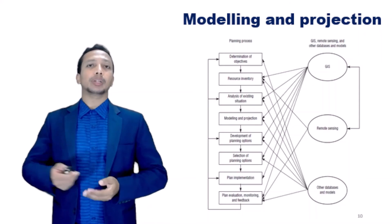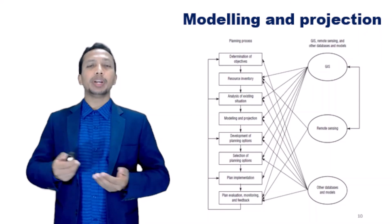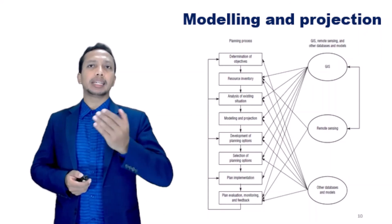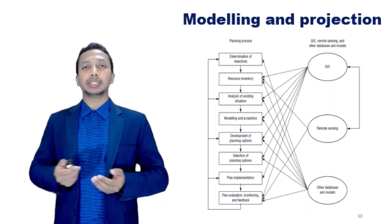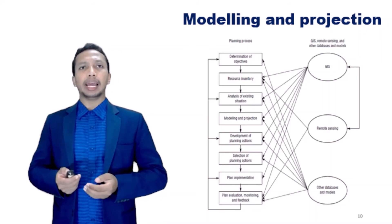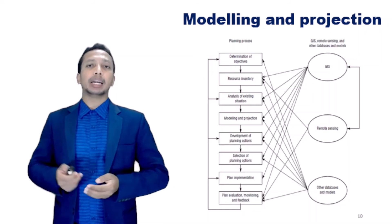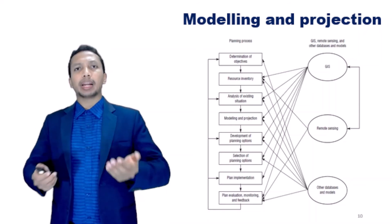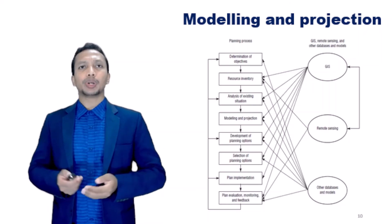Selection of planning options. The final selection of a planning option is increasingly a political process. But planners can provide technical input to this process in order to help the community in making their collective choice. The integration of spatial and non-spatial models within GIS can help to evaluate different planning scenarios. The use of GIS with multi-criteria decision analysis can provide technical input in the selection of planning options.